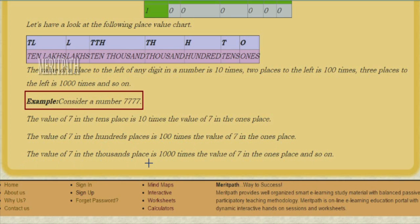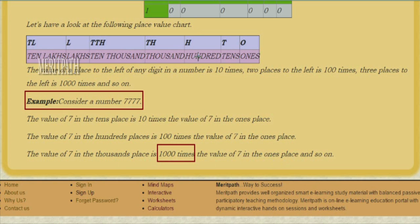The value of seven in the thousands place is one thousand times the value of seven in the ones place — that is, 7 versus 7,000. So the value increases by ten times each place we move to the left. In this manner, the place value increases by ten times at every step. This pattern continues with all numbers.